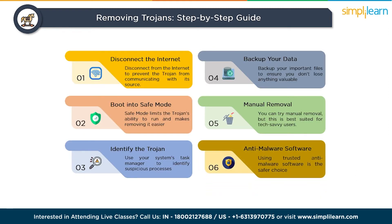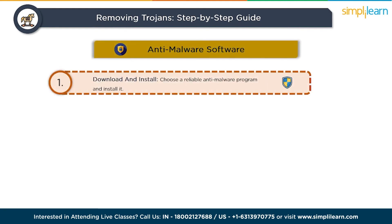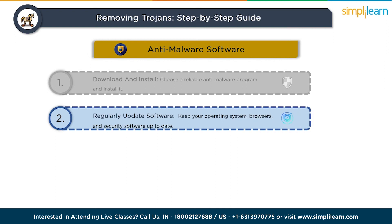The last step is to scan with reputable anti-malware software, which is the safer choice for most users. Download and install a reliable anti-malware program with a good reputation and positive reviews, ensuring it's from a reputable source and offers real-time protection to help prevent future infections. Update the software's database to ensure it recognizes the latest threats. Regularly updating the database ensures the program can detect and remove the latest threats, including new variations of trojans.